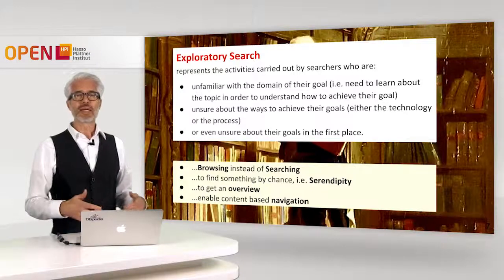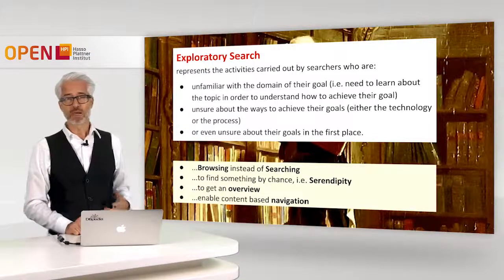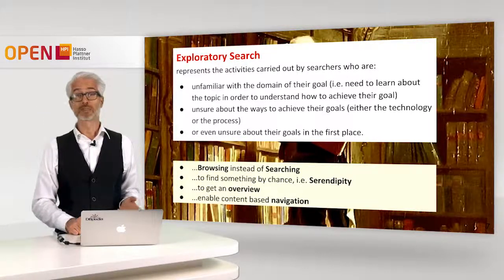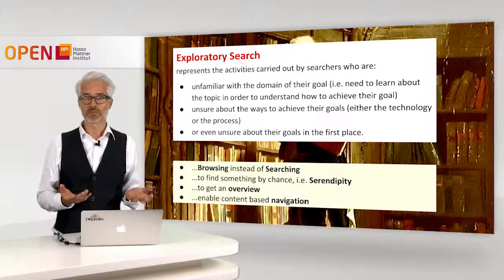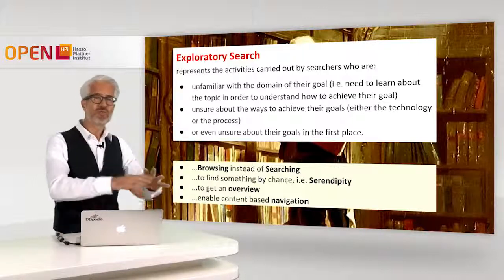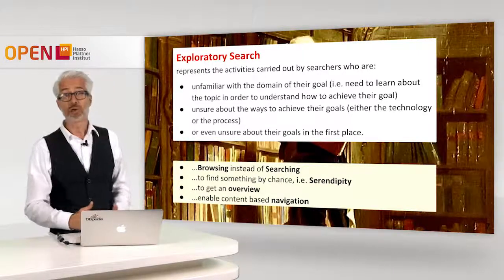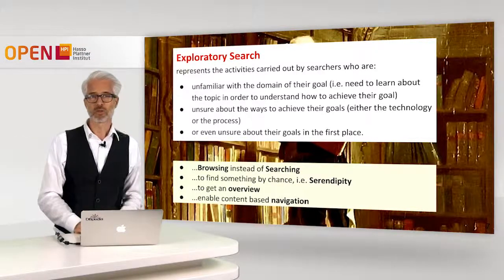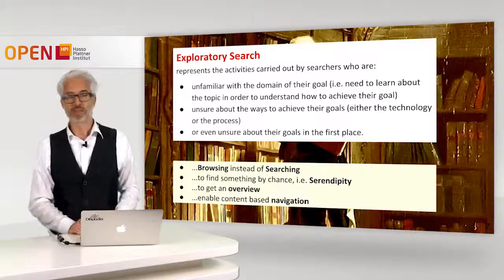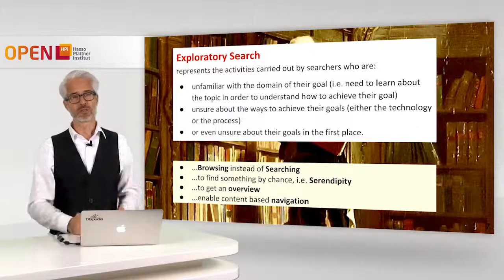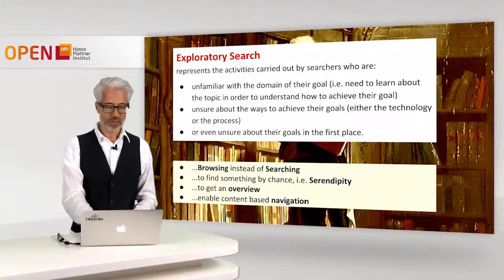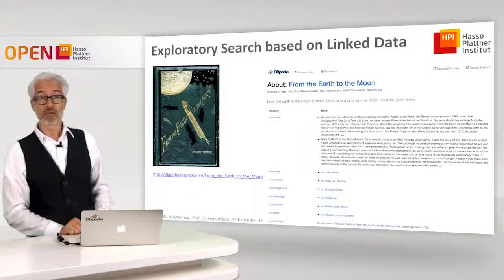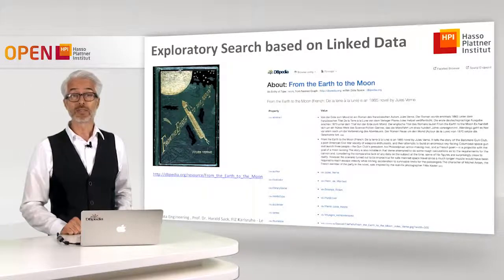You will also be able to find something simply by chance — something you had not looked for in the first place — which is called serendipity or a serendipitous finding. If you want to get an overview of a topic, you have to do exploratory search and enable content-based navigation within your search process. This all is exploratory search, and our question here is: how can we enable exploratory search based on linked data?